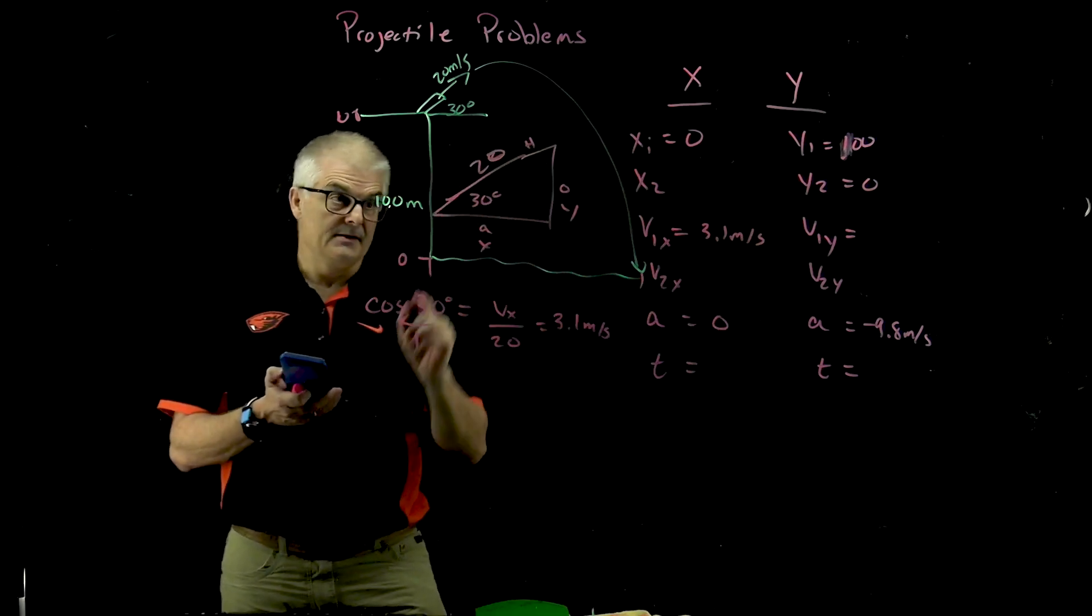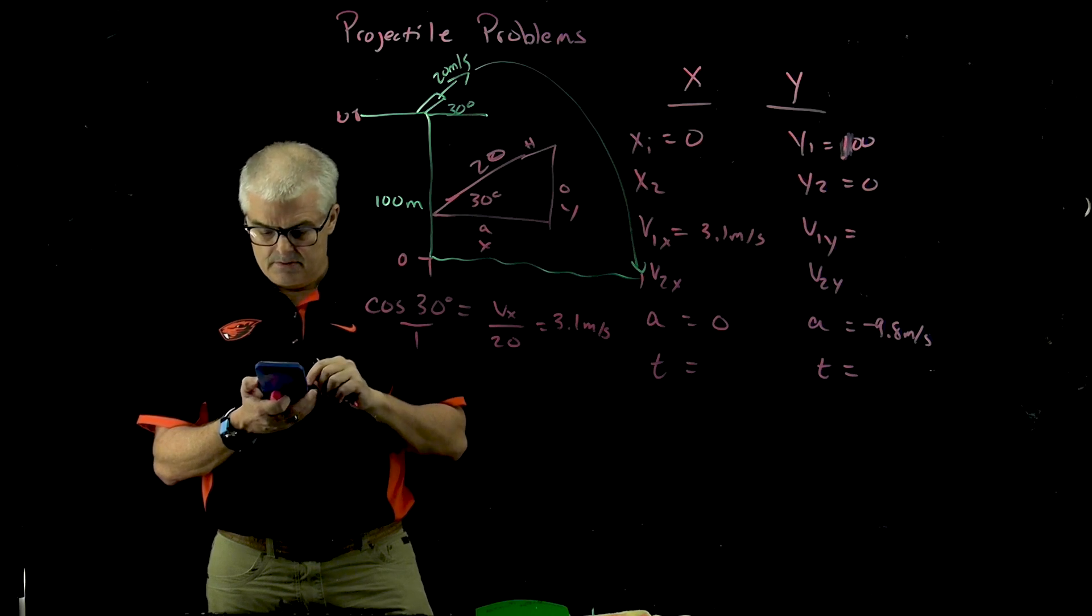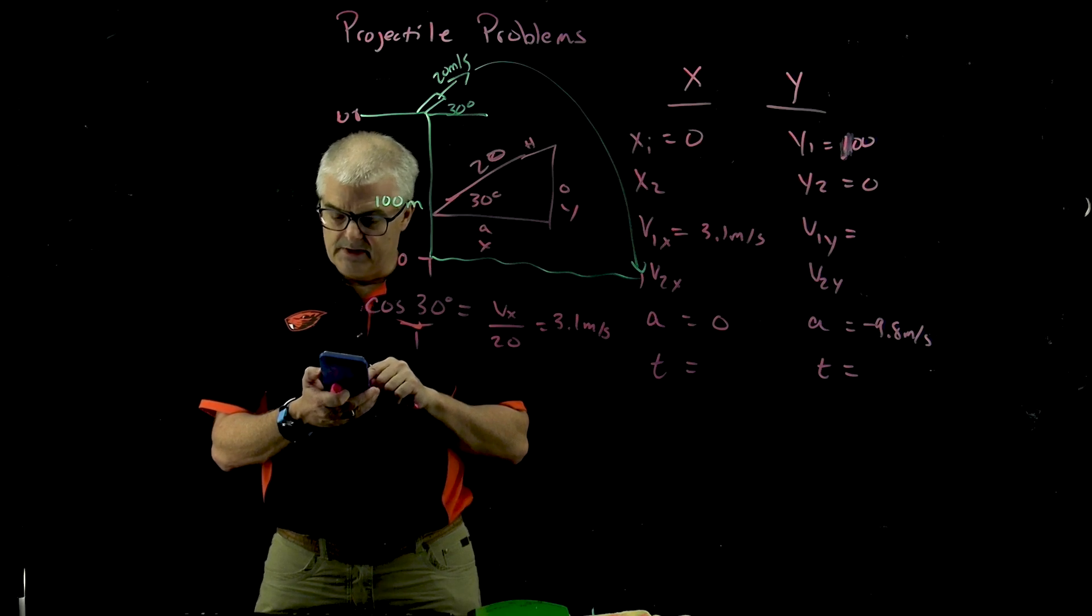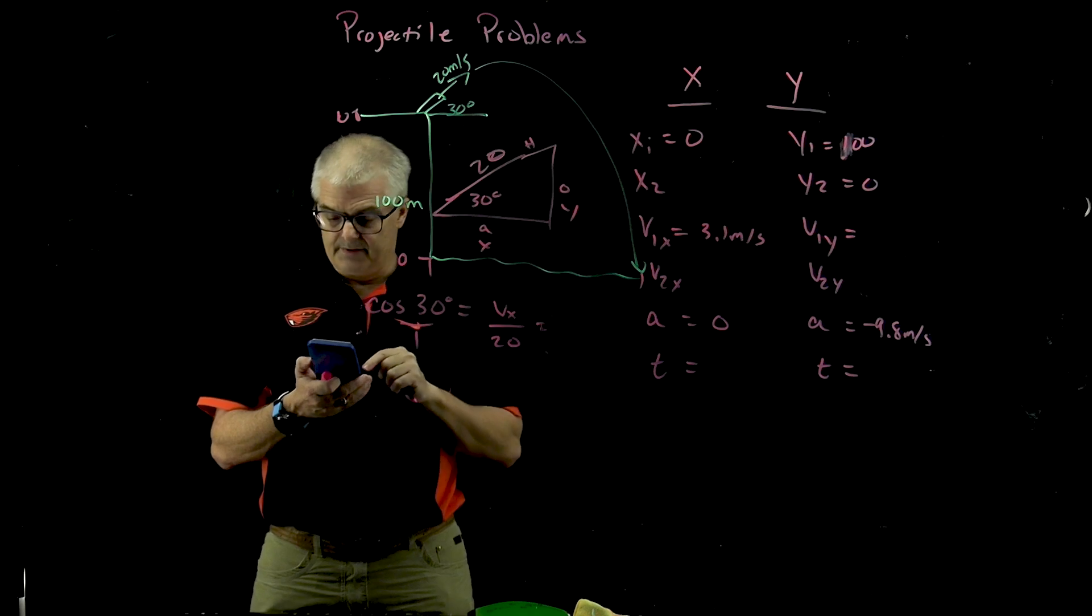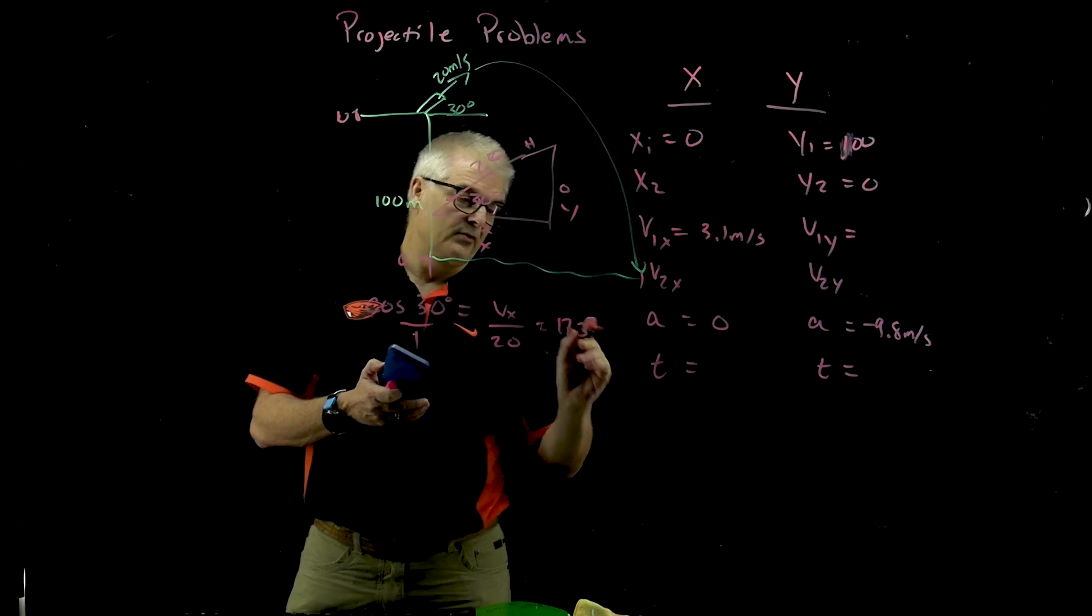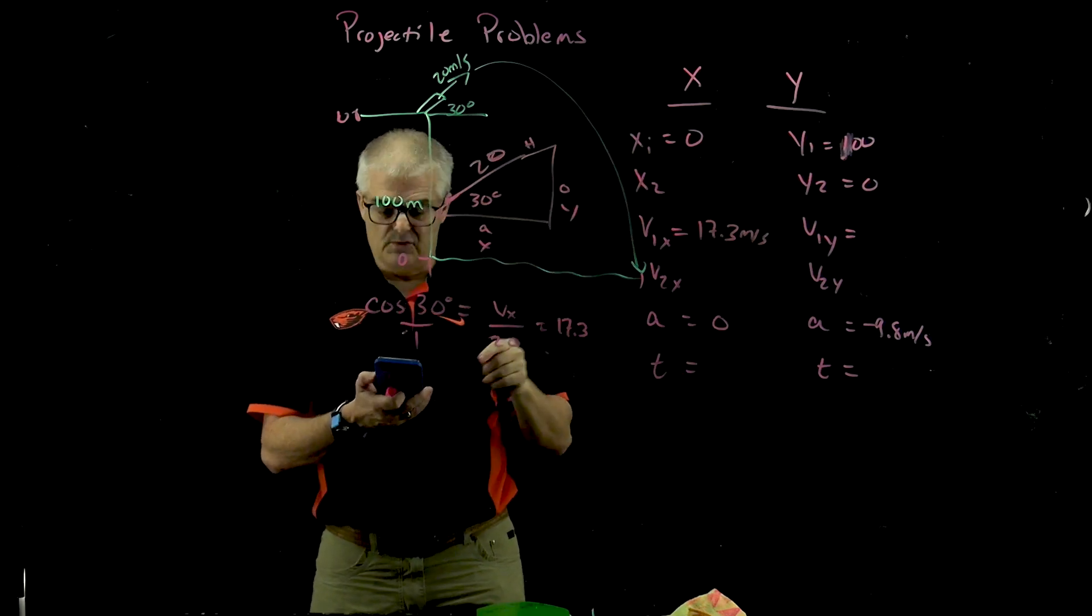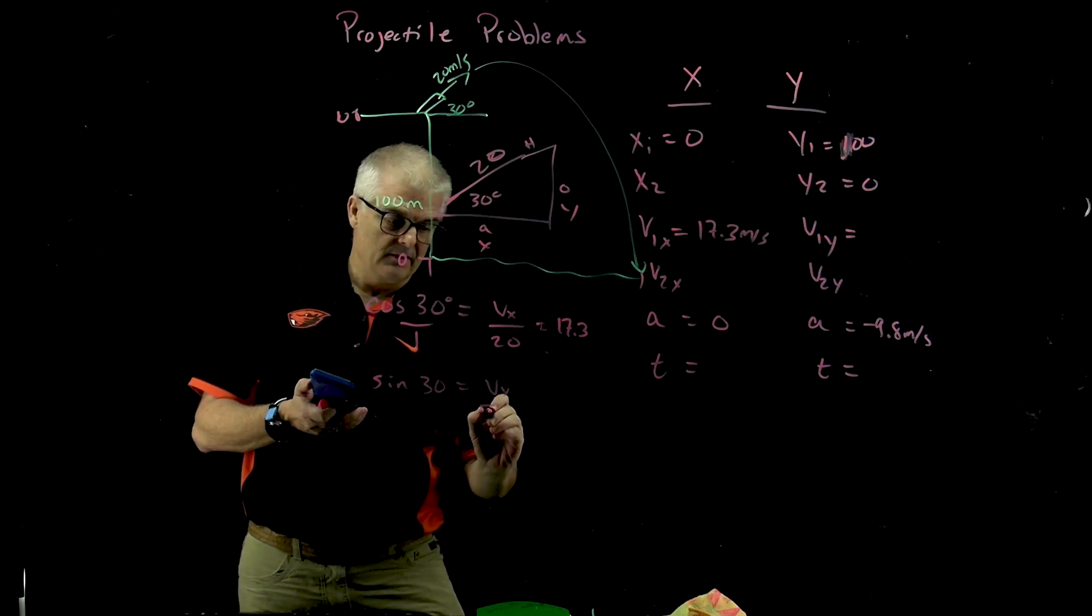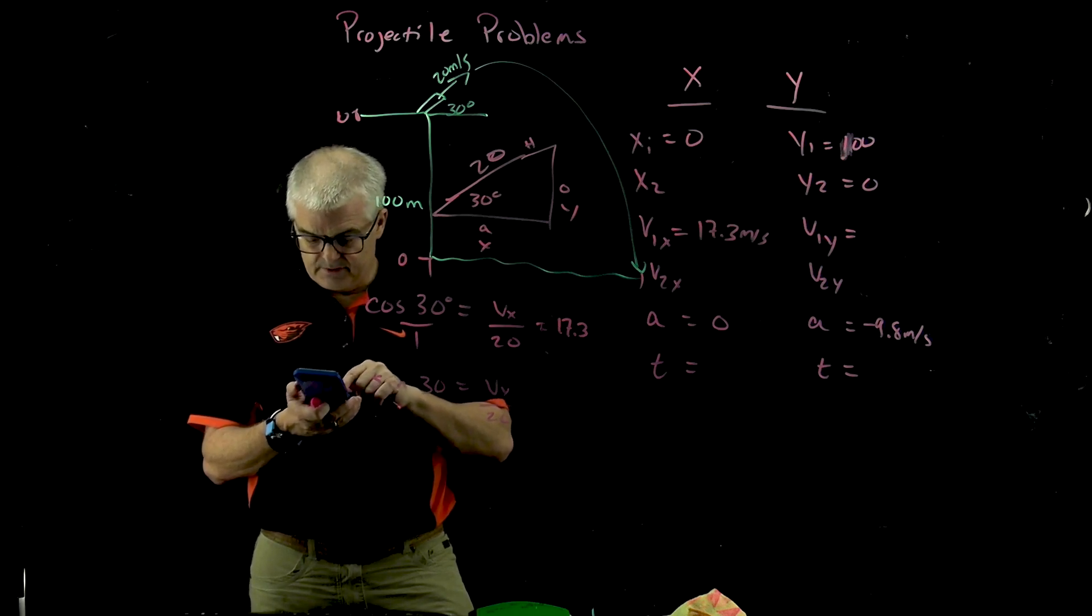That does not make sense. My calculator is in radians and it has to be in degrees. I've just changed my calculator, so 20 times the cosine of 30 gives me 17.3. Watch your calculators—you may have the issue that I just had. It makes sense that this is 17.3. Then vy will be the sine, so sine of 30 equals vy over 20. I'll do sine of 30 times 20 and I get 10.